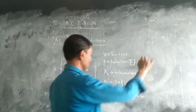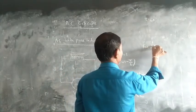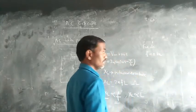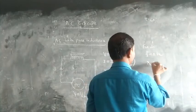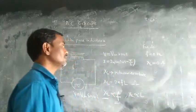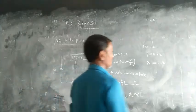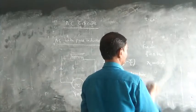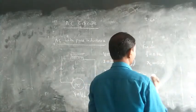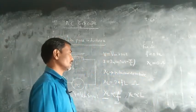For DC, the frequency is zero, so the value of XL is zero — meaning DC passes through the inductor as a short circuit. For AC, as frequency increases, the inductive reactance increases, so the inductor offers some resistance to AC.